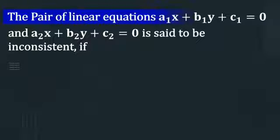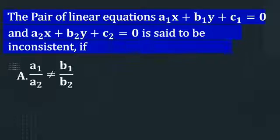The question is: the pair of linear equations a1x plus b1y plus c1 equals 0 and a2x plus b2y plus c2 equals 0 is said to be inconsistent if...